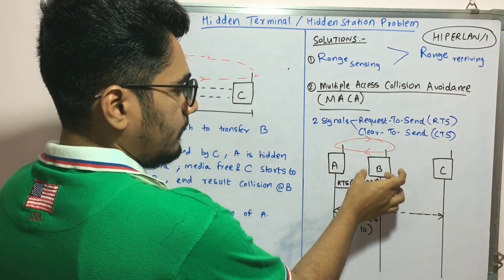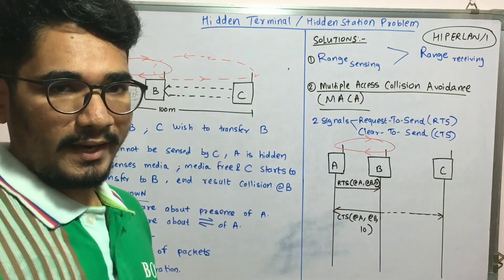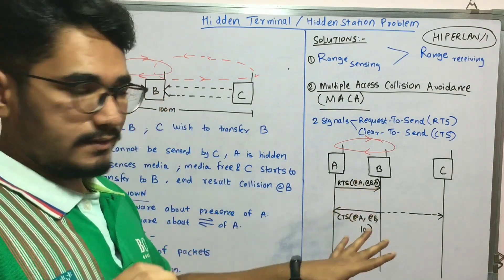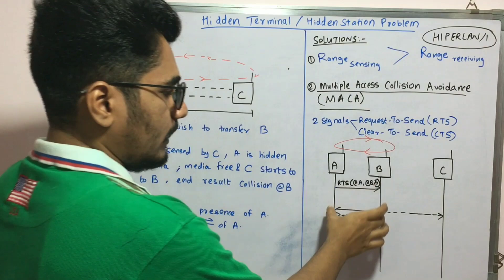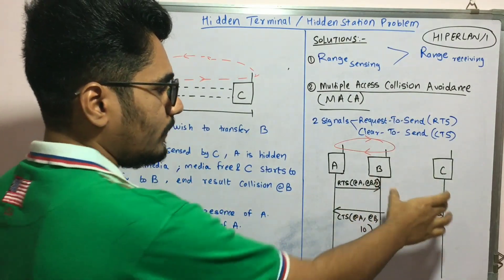When B receives that RTS, it will just give back a CTS, that is clear to send. It will have the address of the sender, the recipient, and the time duration they are going to do the transfer. This CTS is also being sent to the nearby station.